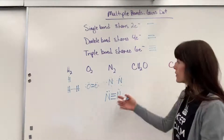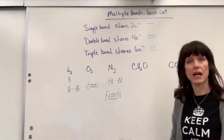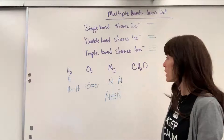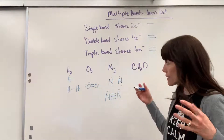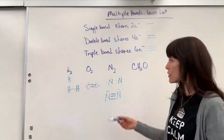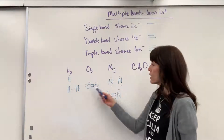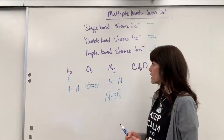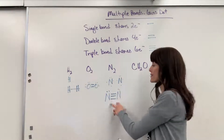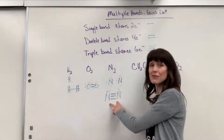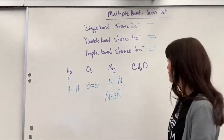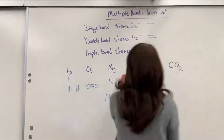All three of these — H₂, O₂, and N₂ — are diatomic elements. In their gaseous elemental form, they have bonding partners because of the stability gained from covalent bonding and sharing electrons.